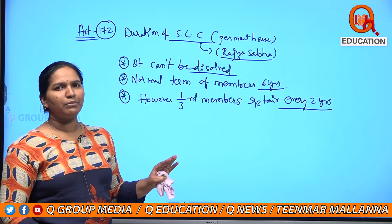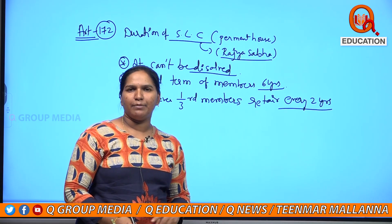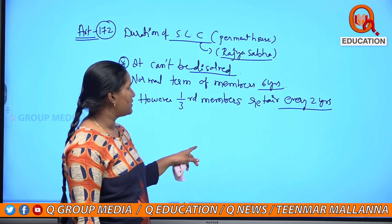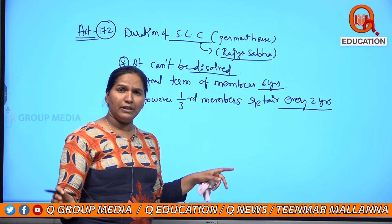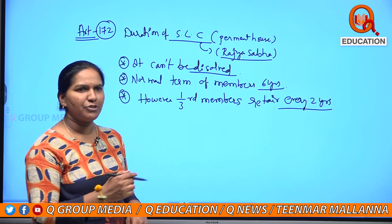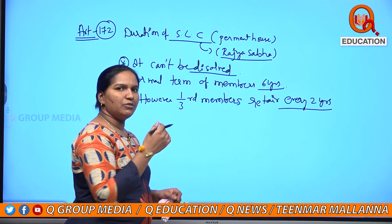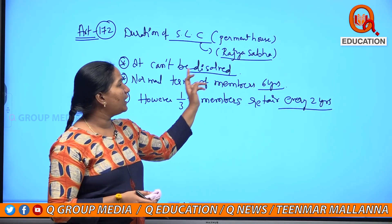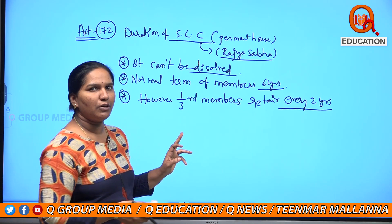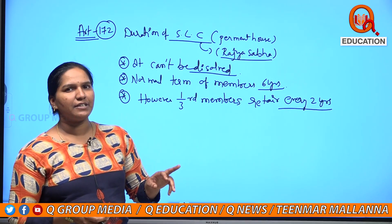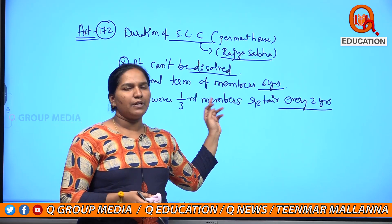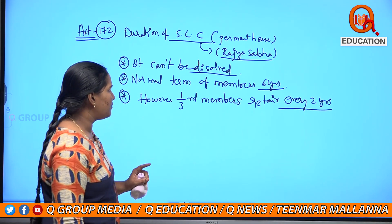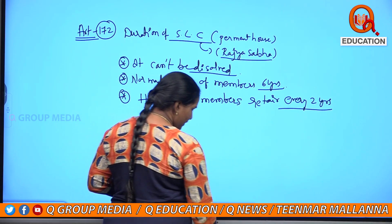One-third members retire every 2 years, and re-elections are held through the Election Commission of India. The assembly has direct elections — general elections — while Rajya Sabha has indirect elections. This is the Rajya Sabha term structure.